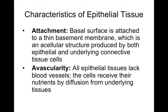All epithelial tissues must have an attachment — without it they would just drift away. Every epithelial tissue has an underlying basement membrane, which is like a big thick layer of fibers — like thick Velcro — that the cells stick to very tightly. The basal surface of the epithelial cells attaches to the basement membrane.